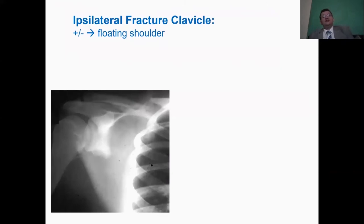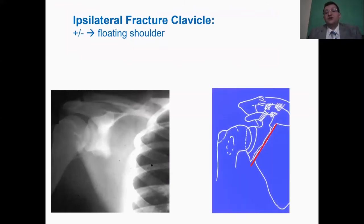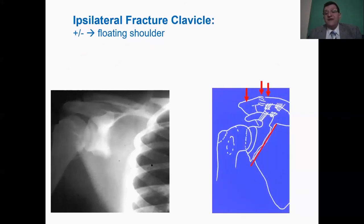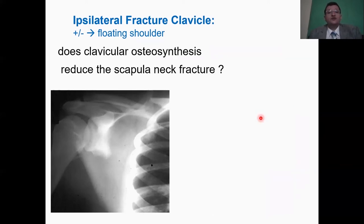Ipsilateral clavicular fractures may or may not be associated with a floating shoulder. A floating shoulder is when we have a fracture through the glenoid neck and is associated with either a medial fracture of the scapula medial to the coracoclavicular ligaments or a rupture of the coracoclavicular ligaments with a fracture of the distal and the lateral clavicle or a complete AC disruption or an acromion fracture. If this happens, we have got a floating shoulder.